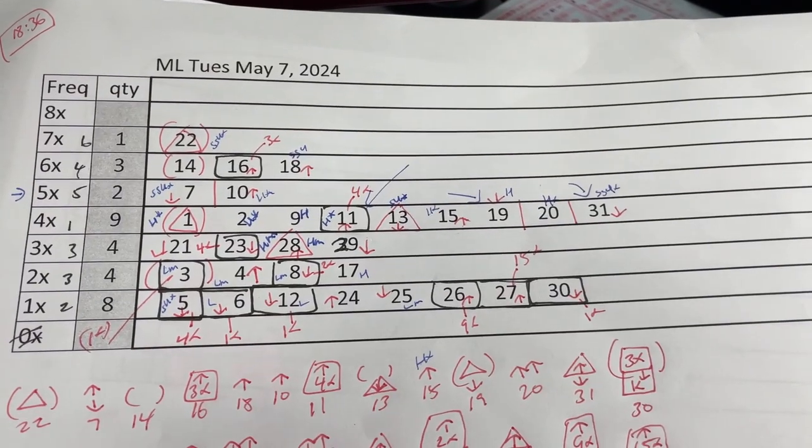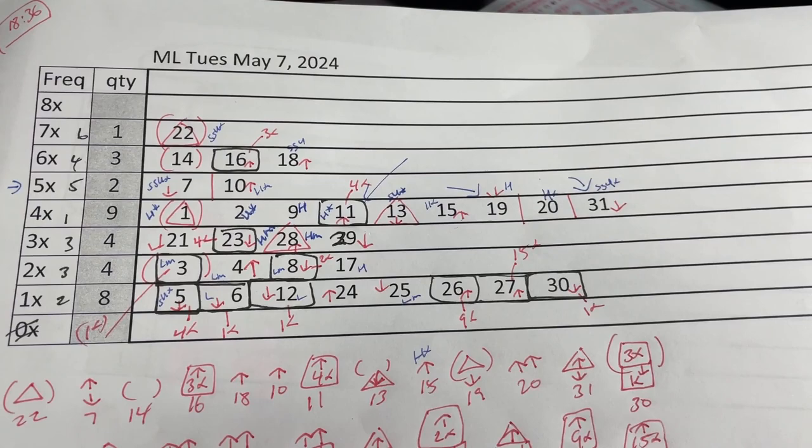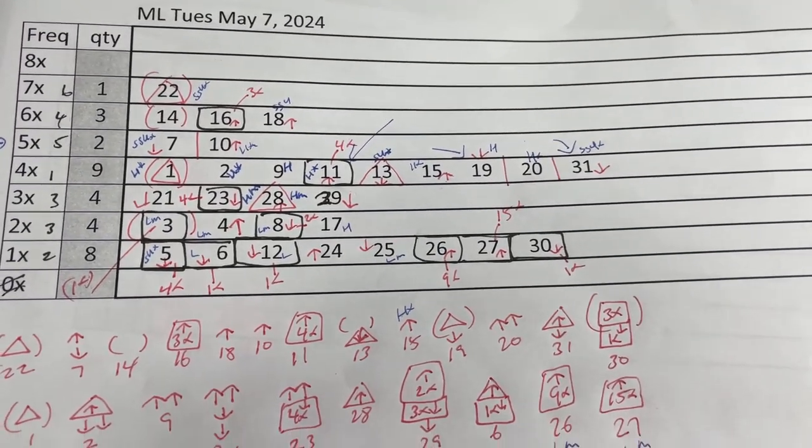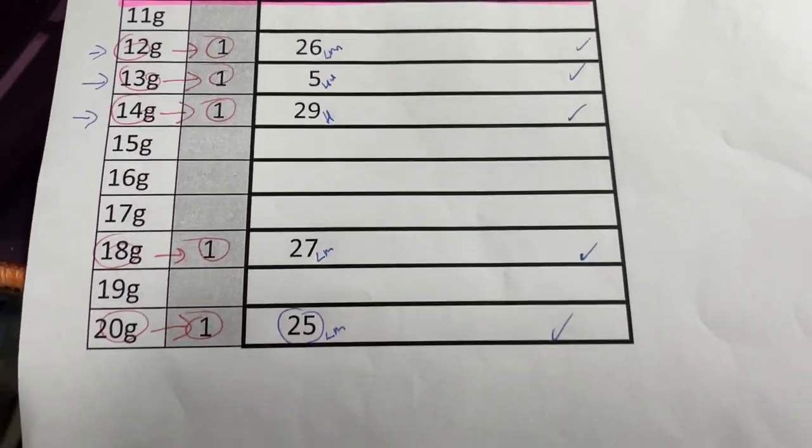You're looking at my mini-lotto worksheet for Tuesday, May 7th, 2024. I've been working very hard trying to find the best numbers for us.